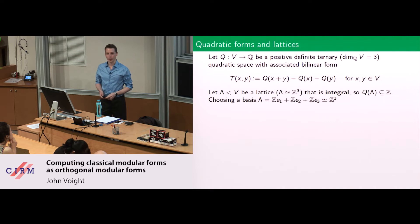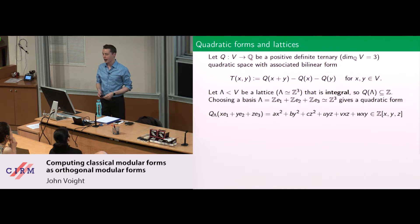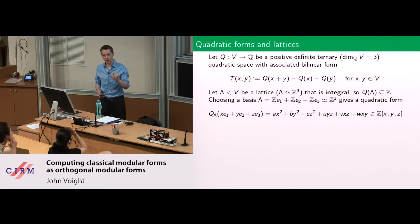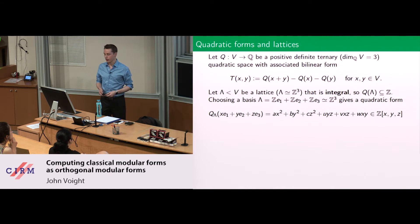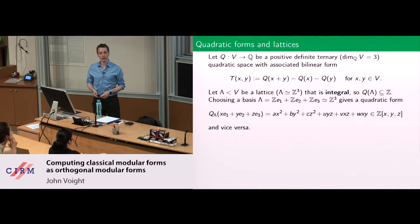I require my lattice lambda to be integral, so I ask that my quadratic form takes values in Z on this lattice. Once you choose a basis — always a brutal thing to do to a vector space, but to do some computations you have to — you see the quadratic form associated to the lattice. You evaluate the bilinear form at each pair of basis vectors, and you end up with coefficients A, B, C, U, V, W. The integrality means these coefficients live in the integers.